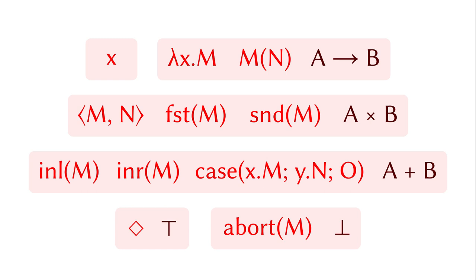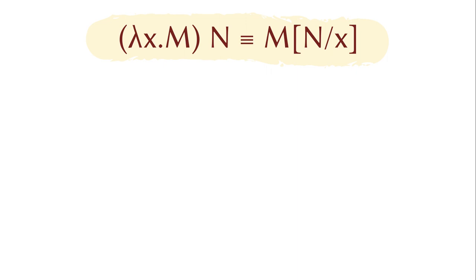Let's check the rules defining judgmental equality. First, the beta rule for functions. If there is a lambda function applying to some argument, it's equal to the substitution. You want to identify both terms, and it seems reasonable to reduce the left-hand side to the right-hand side. It's actually impossible to go the other way.